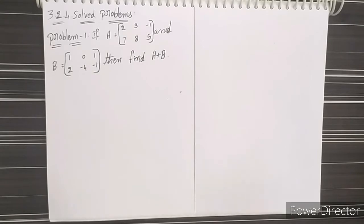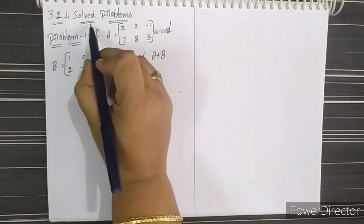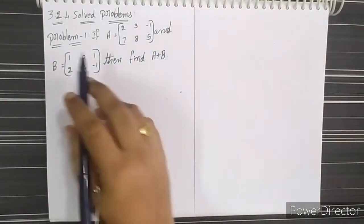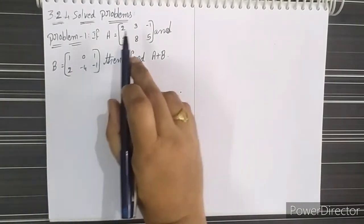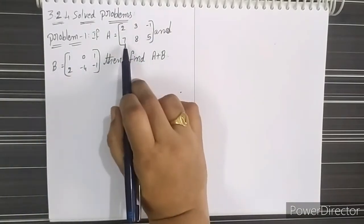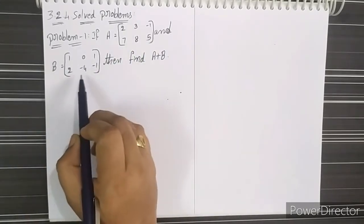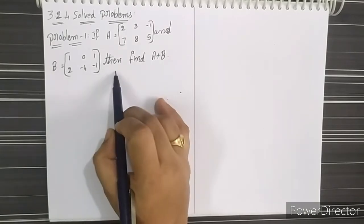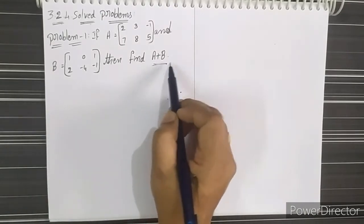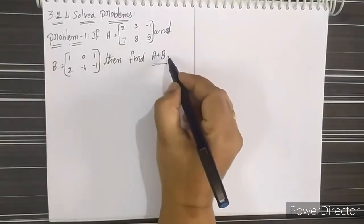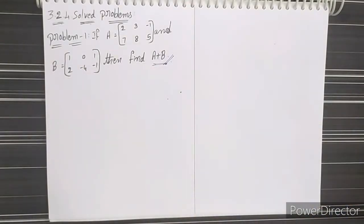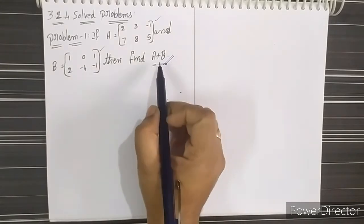In section 3.2.4 solved problems, the first problem is: if A equals the matrix [2, 3, -1; 7, 8, 5] and B equals [1, 0, 1; 2, -4, -1], then find A plus B.